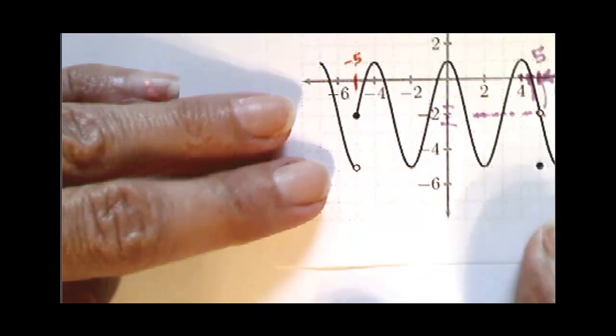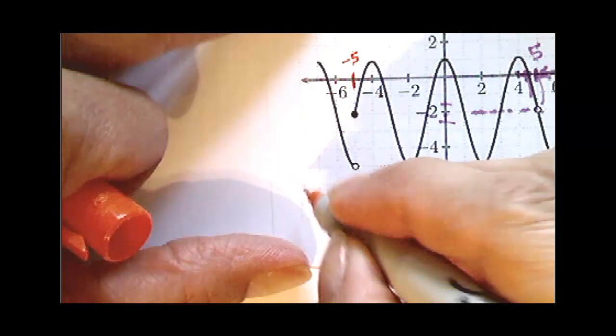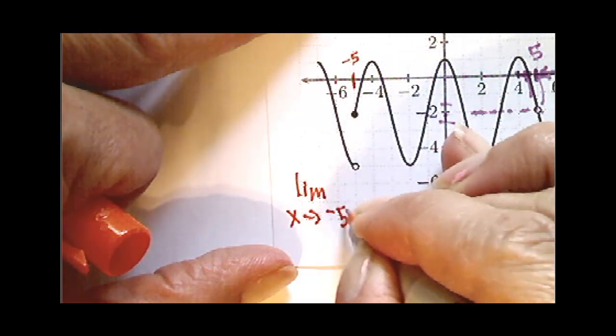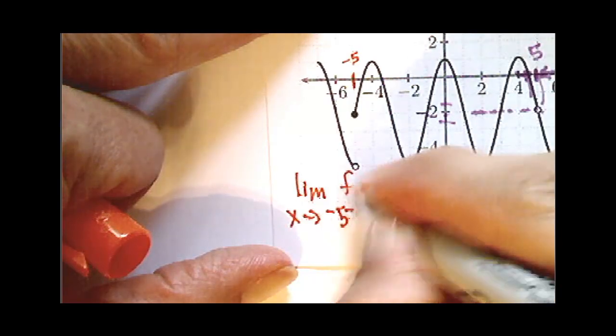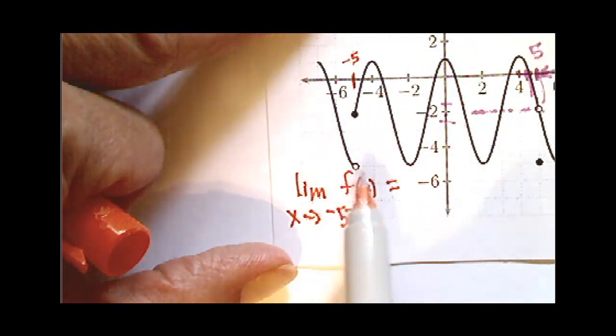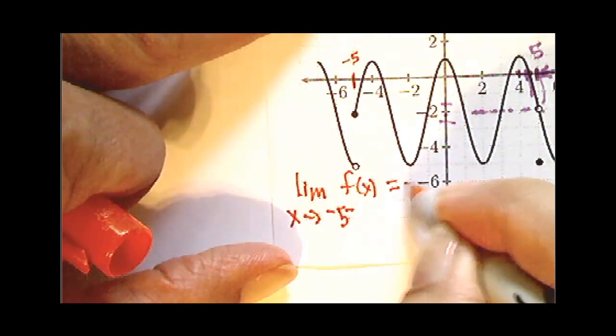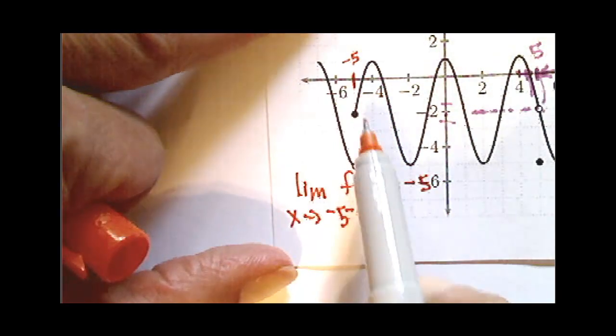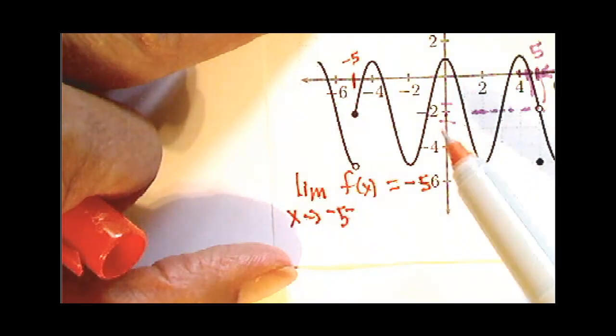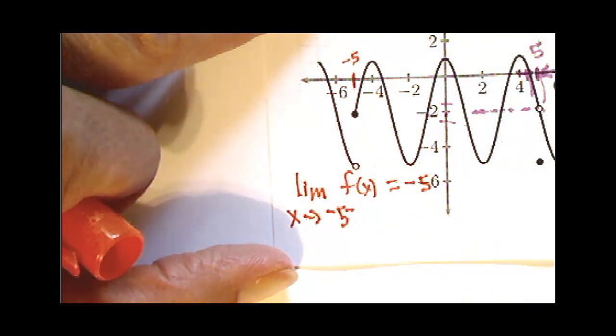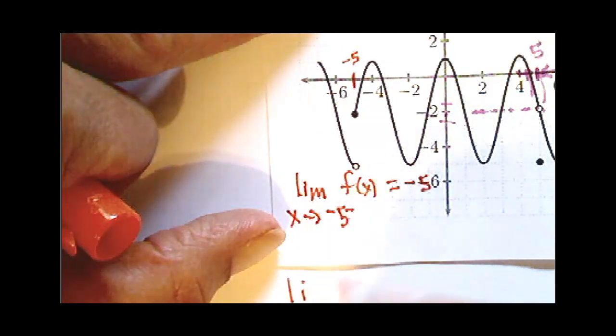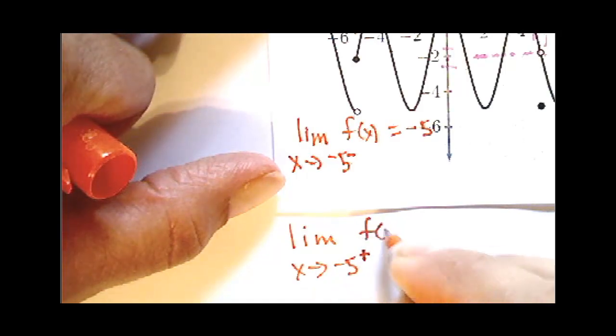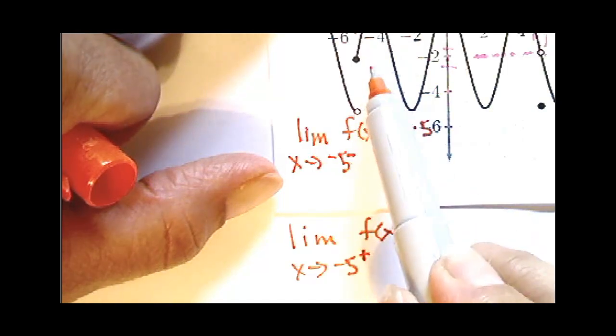So let's just write down what's happening so that we can practice our notation. The limit as x approaches negative 5 from the left of f(x) equals, well where is it going? It is going towards negative 5. Now notice it doesn't hit negative 5; as a matter of fact, f(-5) is negative 2. So remember, the value of the function has little to do with where the function is headed. The limit as x approaches negative 5 from the right of f(x) is negative 2.